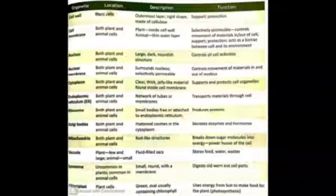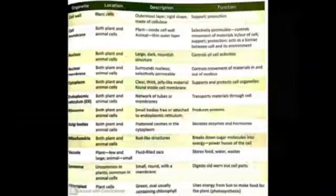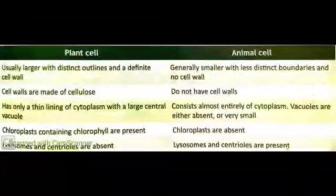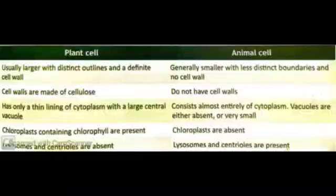Based on these observations, we can differentiate between a plant cell and an animal cell. The table given here will show us the differences between plant and animal cells — there are five points of difference between these two.